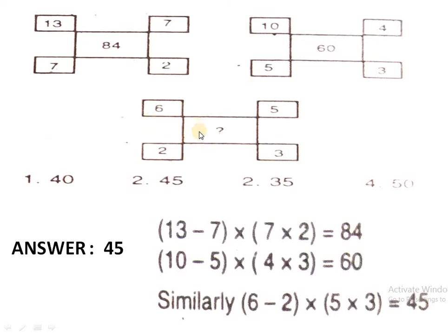Applying the formula to the third diagram: 6 − 2 = 4, and 5 × 3 = 15, giving 15 × 4 = 60. The displayed option is wrong in the slide, but applying the correct same formula you will get 60. So 60 is the correct answer.